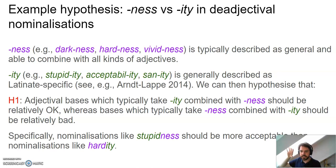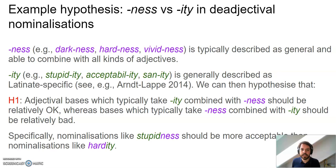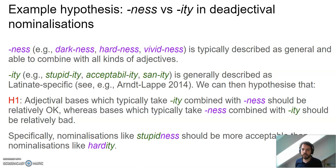At the top of the frequency list of these affixes there are two: -ness, which is absolutely the most frequent nominalizer in English de-adjectival nominalizations, and then -ity. Examples include: hardness, vividness, stupidity, acceptability, sanity. Very often -ness is described as more general and able to combine with all kinds of adjectives, whereas -ity is specific to items that English got from Romance languages — Latin-specific items.